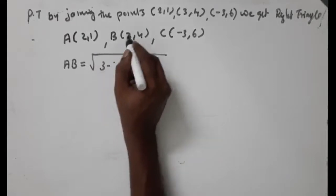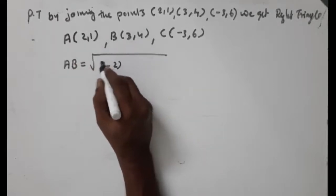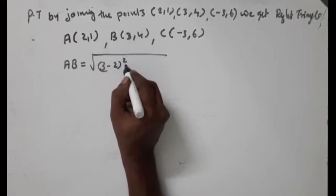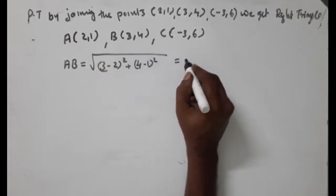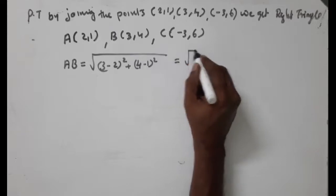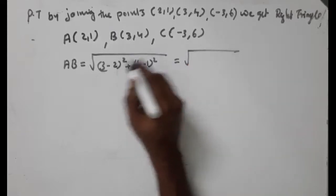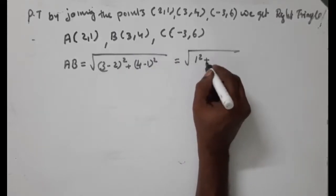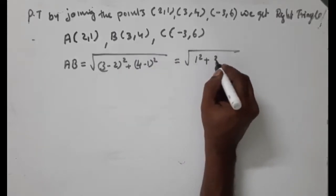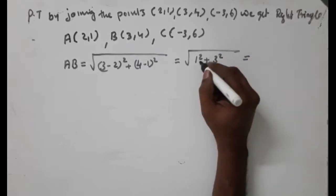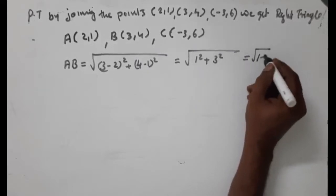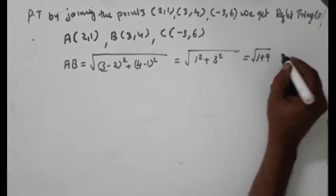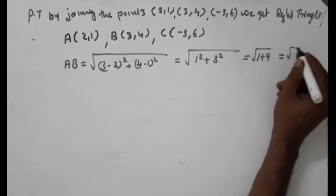Computing AB: root of (3 minus 2) all squared plus (4 minus 1) all squared. That is 1 squared plus 3 squared, which is 1 plus 9, giving AB equals root 10.